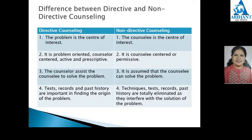In directive counseling, tests, records, and past history are important in finding the origin of the problem — tests are conducted, past history is analyzed, and various records are referred to. But in non-directive counseling, techniques, tests, records, and past history are totally eliminated as they interfere with the solution. Only interaction between counselor and counselee, and data collected through interaction with related persons, is used.